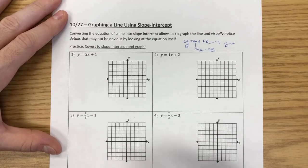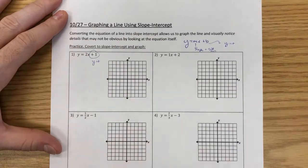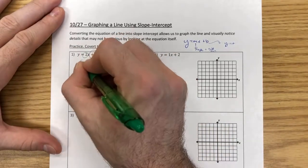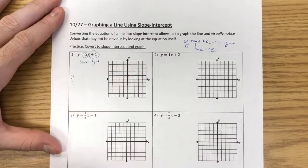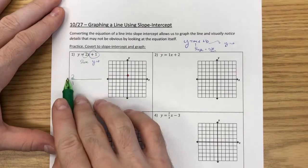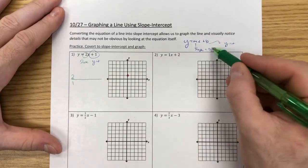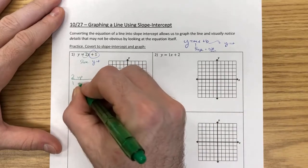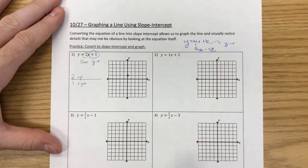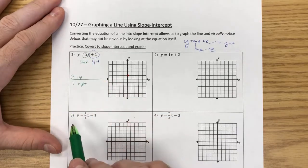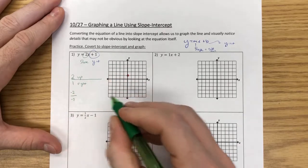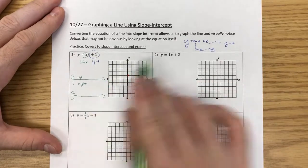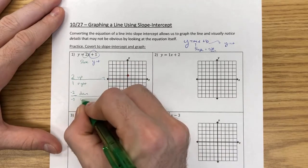For our first example, we have a y-intercept of one, so we place a point at one. The two is our slope, and any whole number two is understood to be over one. Because two is positive, a positive rise means going up two, and a positive run means going to the right one. We could also use negative two over negative one, which still divides out to equal two — a negative rise means going down and a negative run means going left.